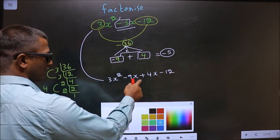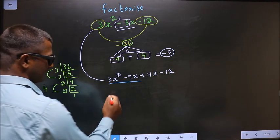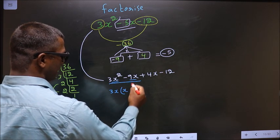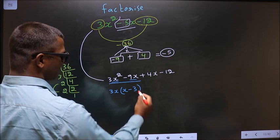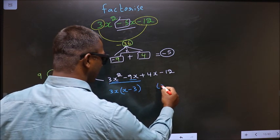Now what can you take out common from these two terms is 3x. So here you get x and here you get -3. Here you got x - 3 means here also you should get x - 3.